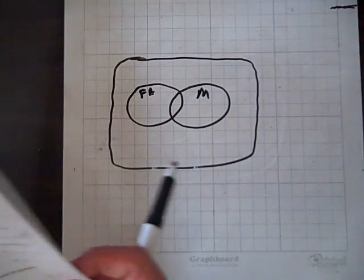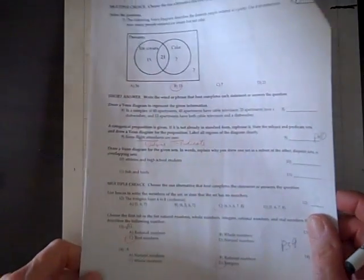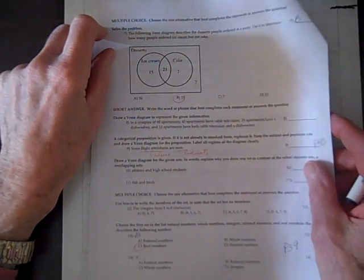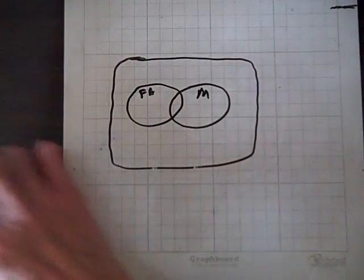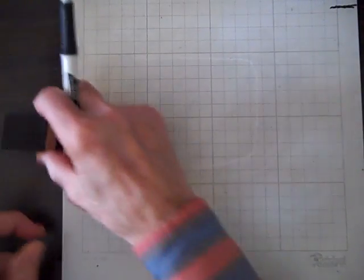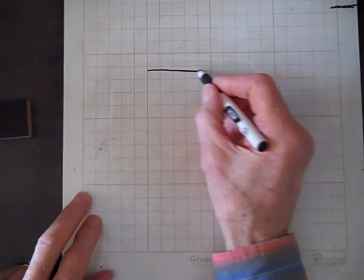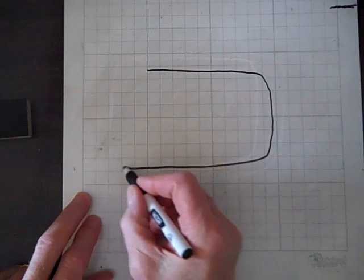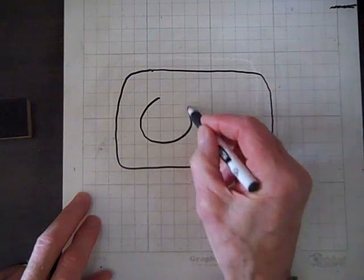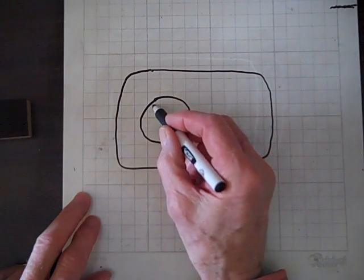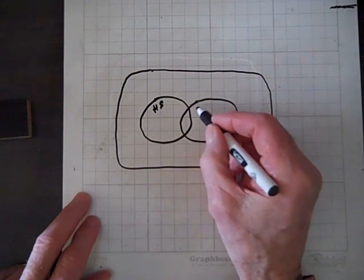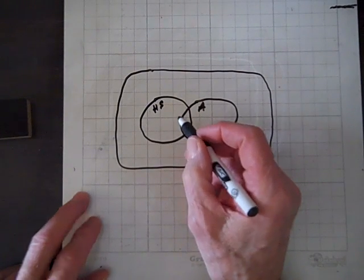Now let's do number 10. We have to do a Venn diagram of athletes and high school students. First of all, we have the universal set. These are all high school students, and these are the set of athletes. Some high school students are athletes.